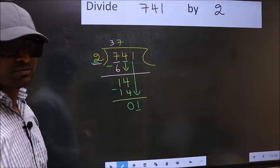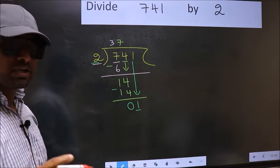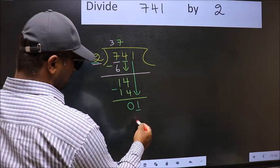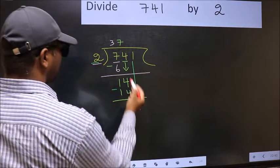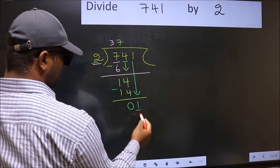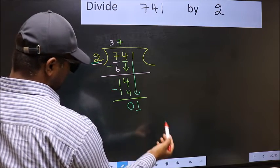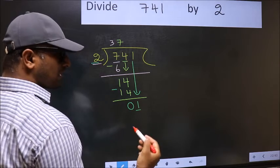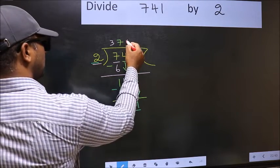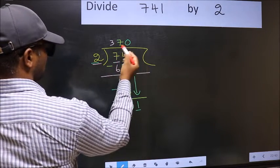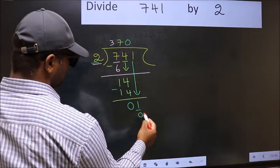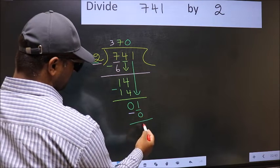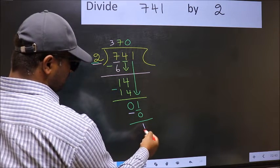Instead, what you should think of is, what number should we write here. If I take 1, I get 2 here. But 2 is larger than 1. So what we do is, we take 0. So 2 into 0, 0. Now you should subtract. 1-0, 1.